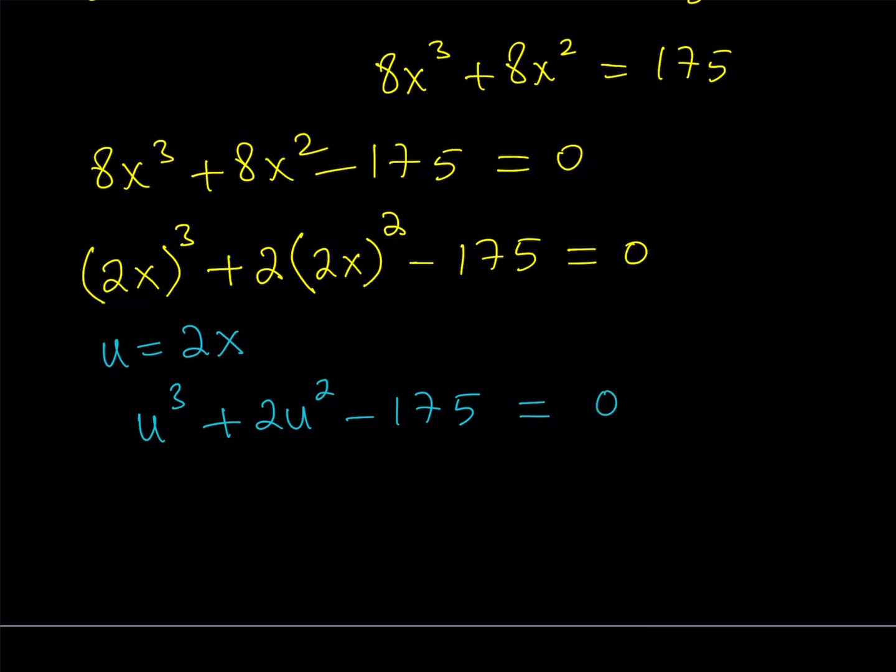Now you might be thinking, is this equation easier to solve? Definitely. Now you're going to be looking at factors of 175, and obviously 1 is a factor, but it's not going to work. 5 is a factor. You can test it out. What other factors do we have? 175 can be written as 5 times 35, right? So definitely 7 is another factor. You can plug in 7. It could be a negative 7. So you're basically going to be testing all these values.